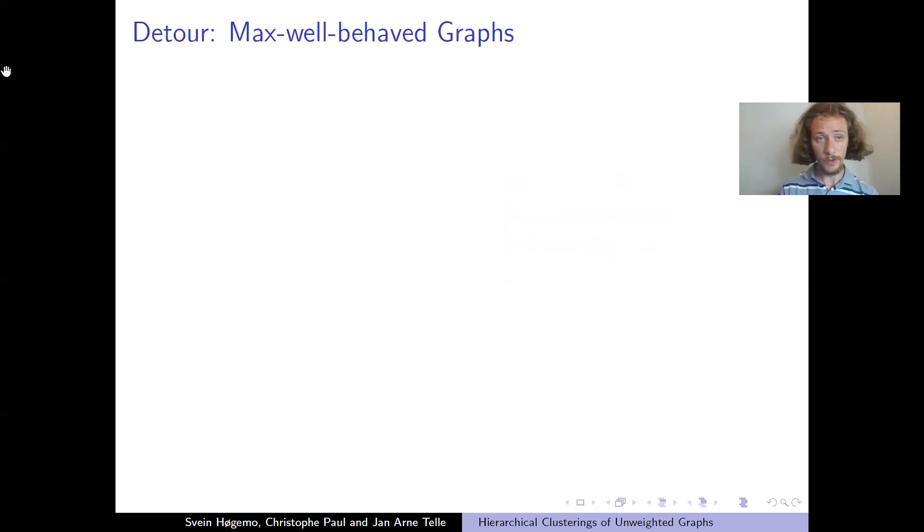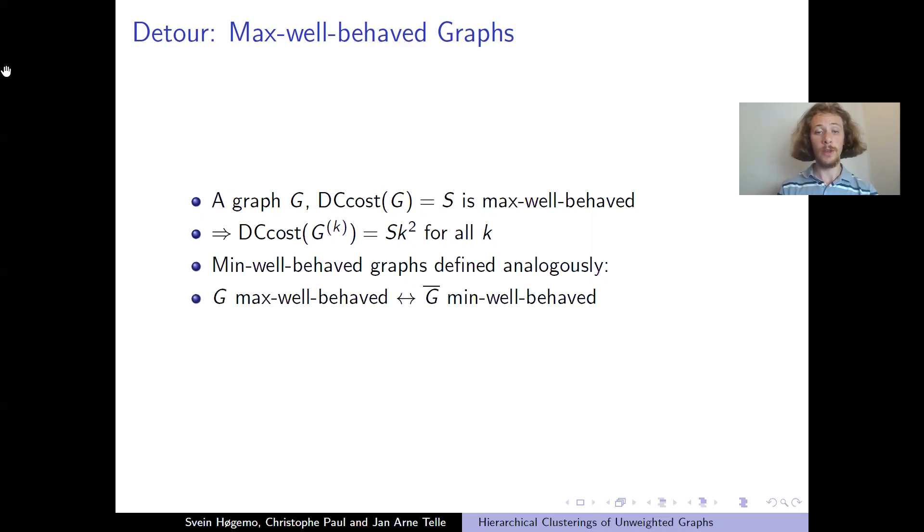So how can we do that? Well, first let's look at the graphs which have this property. We call a graph max well-behaved if it has the property that the best way to cluster k disjoint copies of the graph is just to make the best possible clustering of one copy, and then copy this clustering. And then you get the cost s times k squared for all k. And you can also do the same for the complement of the graph. Then it's min well-behaved.